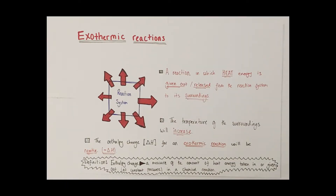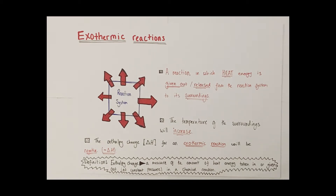This video is going to focus upon exothermic and endothermic reactions, bond breaking and bond making and whether those processes are exothermic or endothermic, and finishing with how to construct energy profile diagrams for exothermic and endothermic reactions. An exothermic reaction is any chemical reaction in which heat energy is given out or released from the reaction system to its surroundings.